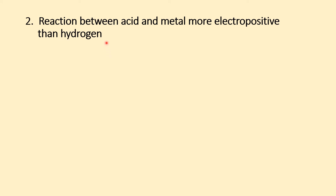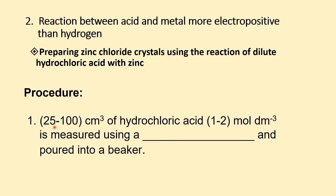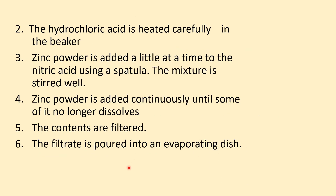Reaction between acid and metal more electropositive than hydrogen. Prepare zinc chloride crystals using the reaction of dilute hydrochloric acid with zinc. Procedure: measure 25 cm³ of hydrochloric acid at 1 mol per dm³ using a measuring cylinder and pour into a beaker. Heat the hydrochloric acid carefully. Add zinc powder a little at a time using a spatula, stir well, and continue adding until some of the zinc no longer dissolves. Filter the contents.